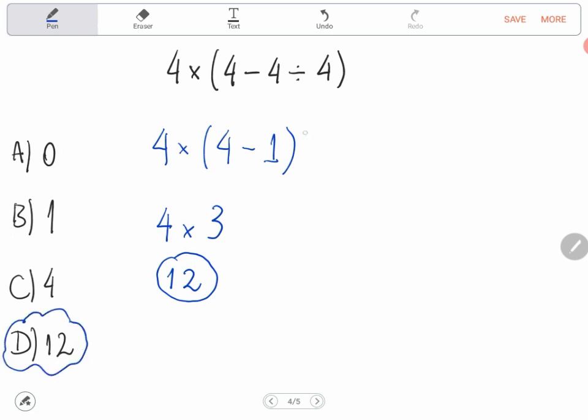But be careful because some people can do this wrong in this way. Let me write again: 4 times 4 minus 4 divided by 4.